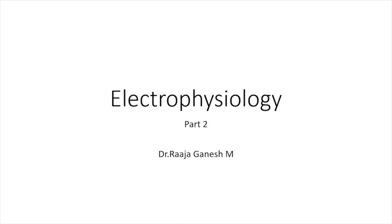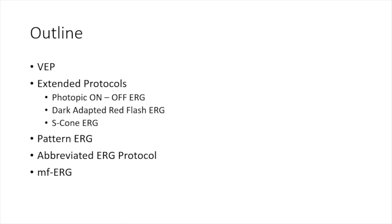Good evening everyone. Today I'll be presenting on the continuation of my previous class on ERG. The topic is electrophysiology part 2. The first part, seen around two months back, was about full field ERGs. Today we'll go into more detail on the extended and abbreviated protocols. The outline will cover what each one is, normal waveforms, where they originate, and how to localize lesions if waveforms are abnormal. We'll also see a few case examples.